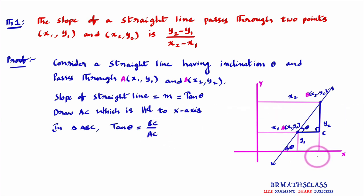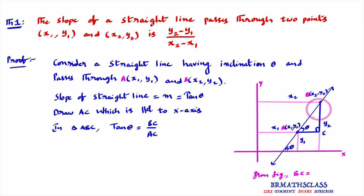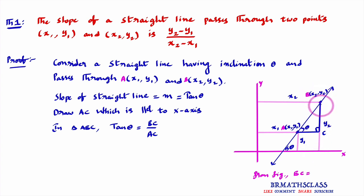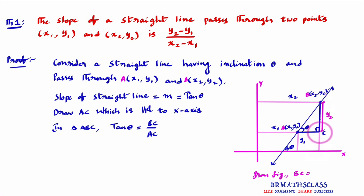From the diagram, we need to identify BC and AC. The length from the x-axis to point A is y1, and the full length to point B is y2, since B is x2, y2. The smaller part is y1, so BC equals y2 minus y1. You can observe this easily from the diagram.